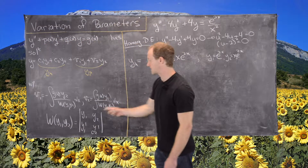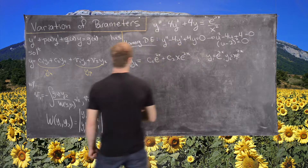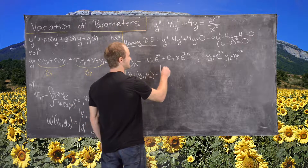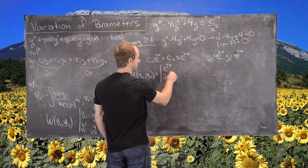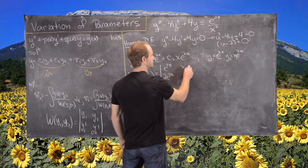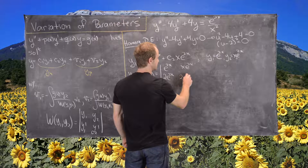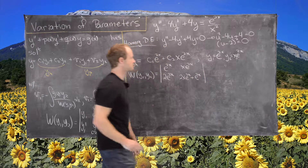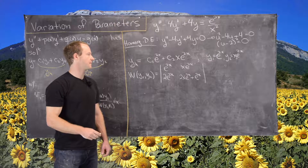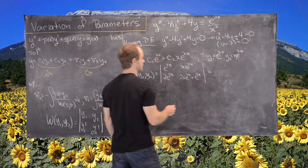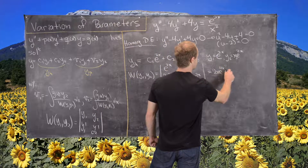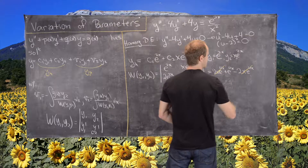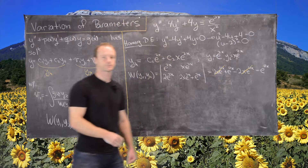Since it will be useful for several steps ahead, let's calculate the Wronskian of y1 and y2. The matrix entries column-wise are: e to the 2x, 2e to the 2x, x e to the 2x, and 2x e to the 2x plus e to the 2x (using the product rule). Taking the determinant gives 2x e to the 4x plus e to the 4x minus 2x e to the 4x. The two x-terms cancel, leaving just e to the 4x.